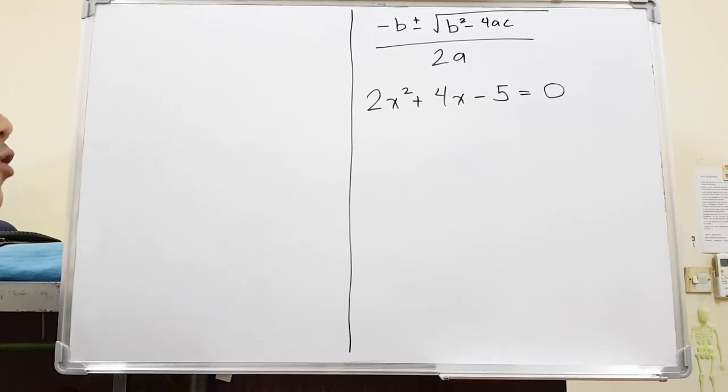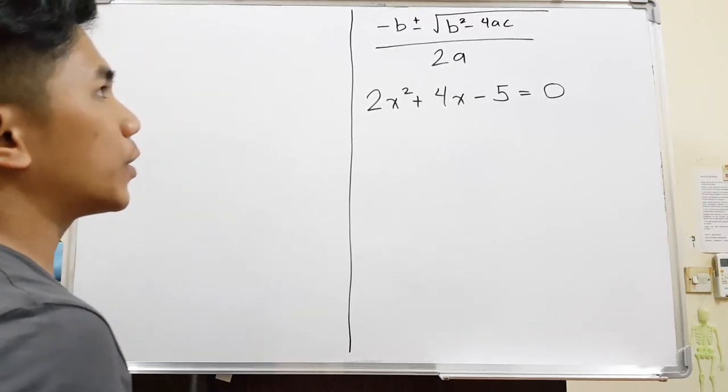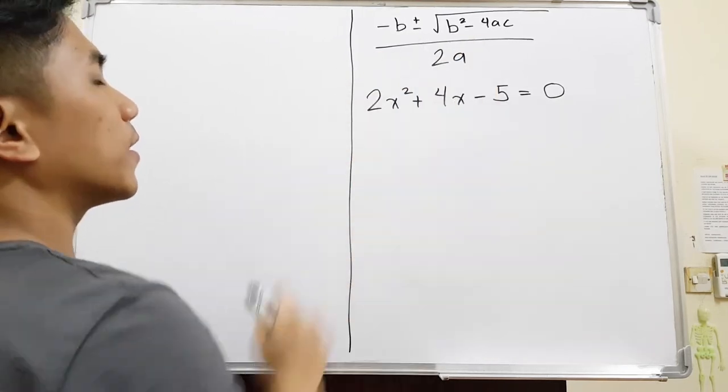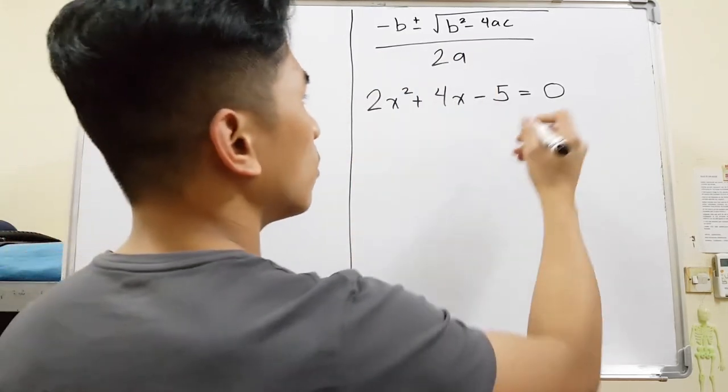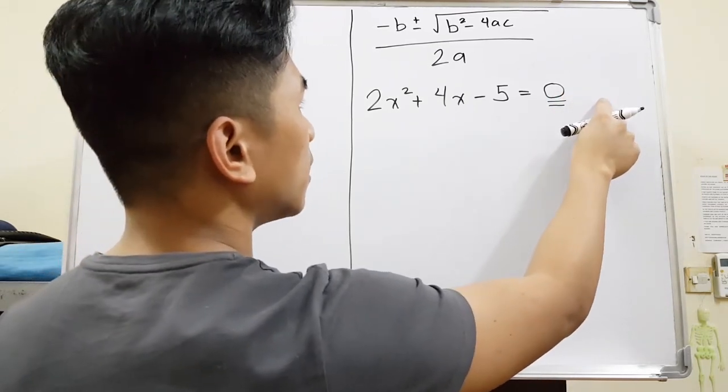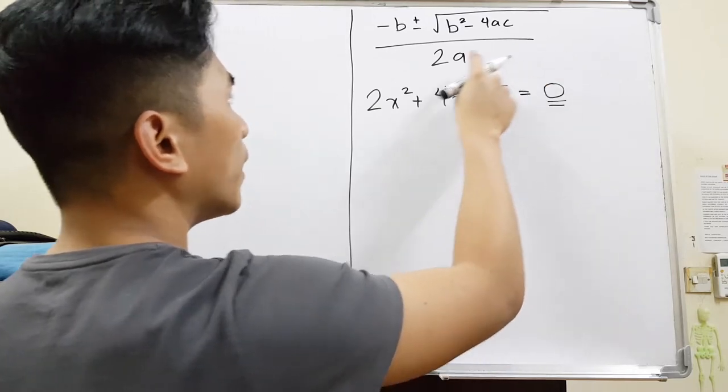We are going to solve a quadratic trinomial using the quadratic formula. When you are using the quadratic formula, just make sure that one side is equivalent to zero. If it's not equivalent to zero, for example there are more numbers on one side, all you have to do is bring them to the other side.